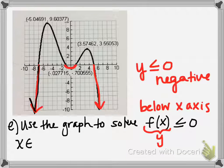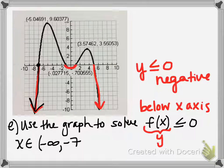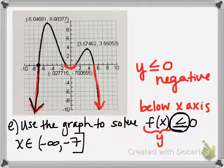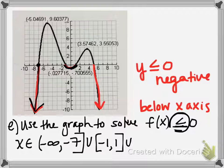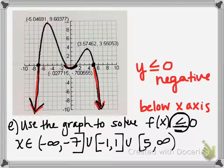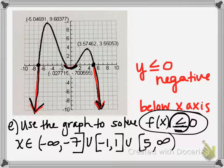The first piece is from negative infinity to the x-intercept at negative 7. Because the inequality is less than or equal to, we include negative 7 with a bracket, since that's where the graph equals 0. Then the inner portion below the x-axis is from x equals negative 1 to x equals positive 1. And the last interval is the far right-hand side below the x-axis, from positive 5 to positive infinity. These are the intervals that are the solutions to f(x) ≤ 0.